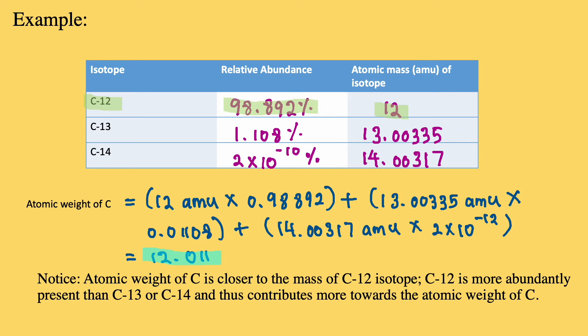we will calculate the atomic weight of carbon as follows: 12 AMU multiplied by 0.98892 plus 13.00335 into 0.01108 plus 14.00317 multiplied by 2 × 10^-12. This will give us 12.011.